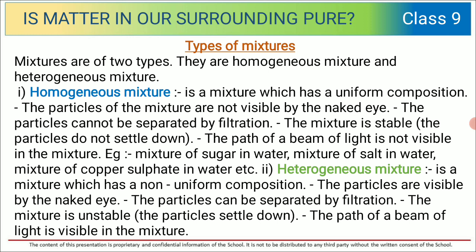Pay attention very carefully, because we are going to discuss what is a homogeneous mixture and what is a heterogeneous mixture. A homogeneous mixture is a mixture which has uniform composition. Particles cannot be separated by filtration. The particles of this mixture are not even visible to the naked eye — they are very very tiny. We cannot separate them by filtration either. The mixture is stable, meaning the particles do not settle down — they are mixed evenly.